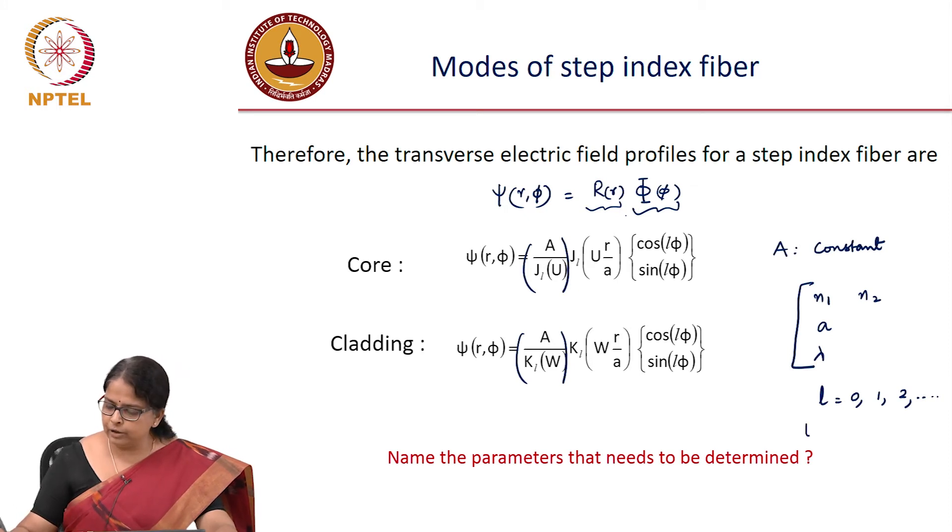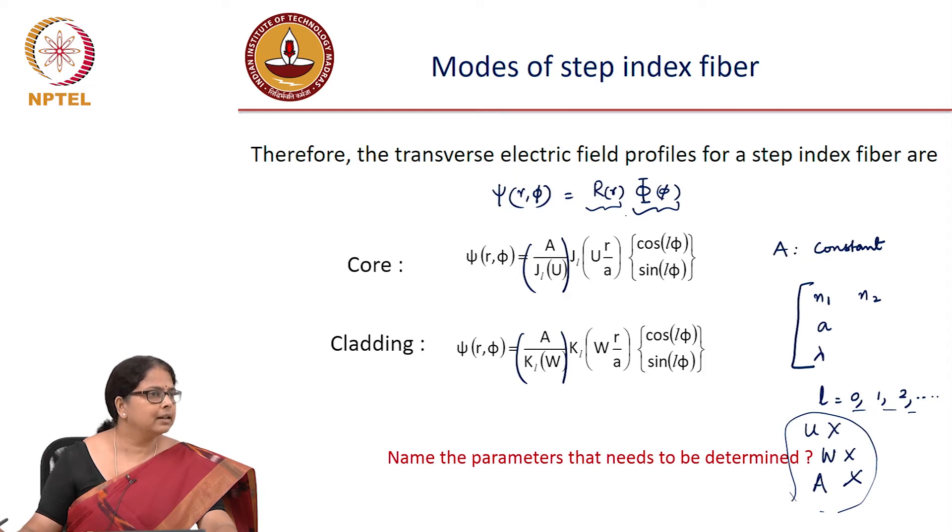Do I know u value at this moment? I do not know because I do not know β. But I know that if I know β, I can calculate this u value. And similarly, w I do not know. Do I know this A constant? That also I do not know. So these are your unknowns and you should be able to calculate all these unknowns for each value of L. And somehow they should get connected to the n₁, n₂, a, and λ of the fiber. This is the big agenda that we have.